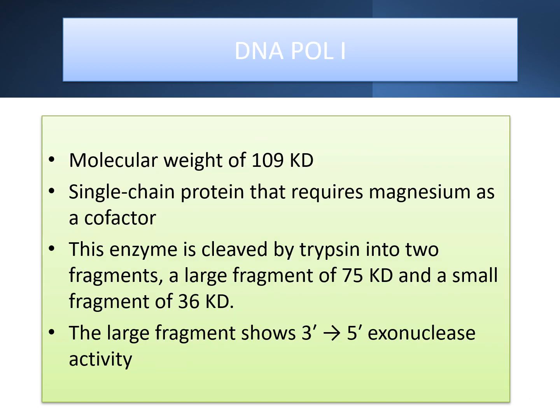DNA polymerase 1 has a molecular weight of 109 kilodaltons. It is a single polypeptide chain which requires magnesium as a cofactor for its function. When this enzyme is cleaved by trypsin, it is cleaved into two fragments: the large fragment of 75 kilodaltons and the small fragment of 36 kilodaltons. The large fragment has 3' to 5' exonuclease activity — that is, proofreading activity resides in the large fragment.